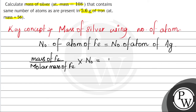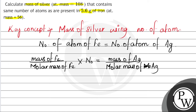In the case of silver, mass of silver divided by molar mass of silver gives number of moles, which is then multiplied by Avogadro's number. Now the mass of iron is given as 5.6 grams. So: 5.6 divided by the molar mass of iron, which is 56, multiplied by Avogadro's number 6.023 × 10²³.